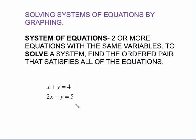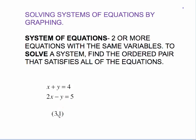To solve a system of equations, that means you need to find the ordered pair that satisfies all the equations. What satisfies means is find the ordered pair that works. Now I'm going to give you an ordered pair, 3, 1. I want to see if this ordered pair happens to work.